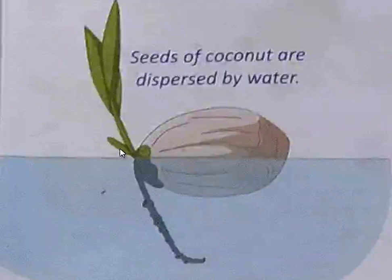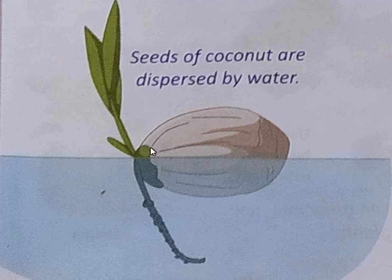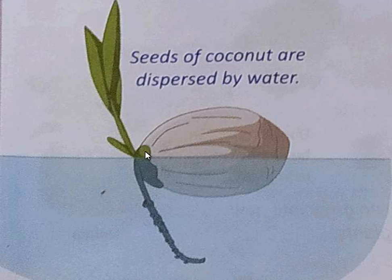Now, let us observe the picture here. Seeds of coconut are dispersed by water. When the coconut falls in the river, you can see the same plant growing over there. If you get that plant, you can keep it at home also. If you want to grow it at home, you have to take a coconut and keep it in water.